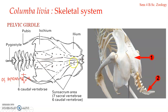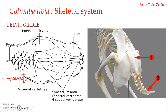The part known as the synsacrum is formed by the fusion of vertebrae — specifically the sacral vertebrae and a few of the caudal vertebrae fused together. Each os innominatum lies on either side of the synsacrum. Each os innominatum is composed of the ilium, ischium, and pubis.